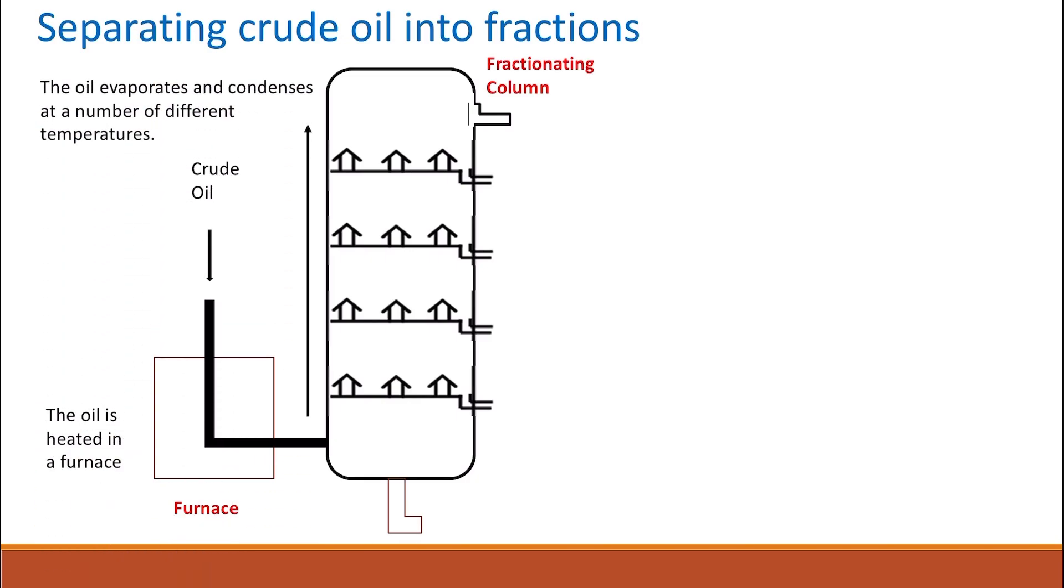The fractionating column has different temperatures, and as you go up, the temperature decreases. Different fractions are separated at different places as fractions of hydrocarbons with similar numbers of carbon atoms. At the top, you're going to find the gases.